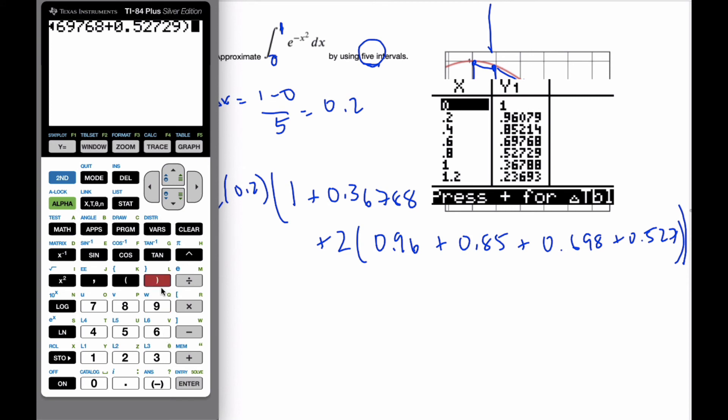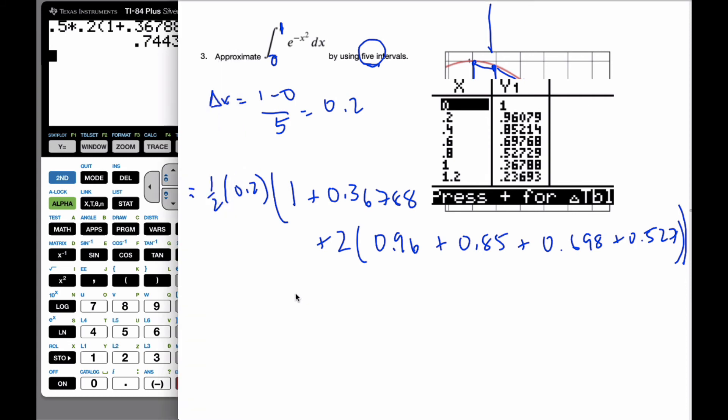And that, I believe, is all the values put in there. And when I hit enter, I get an area that is going to be 0.7443.